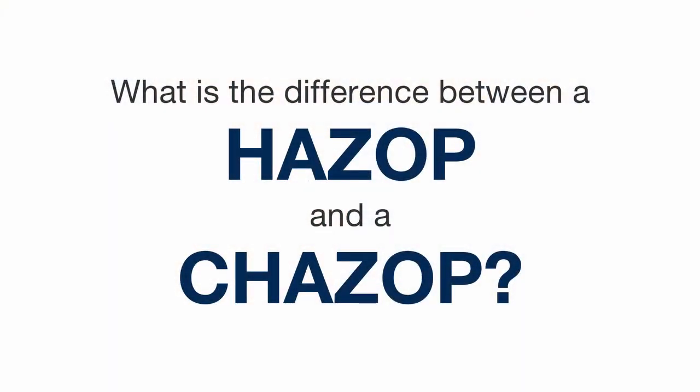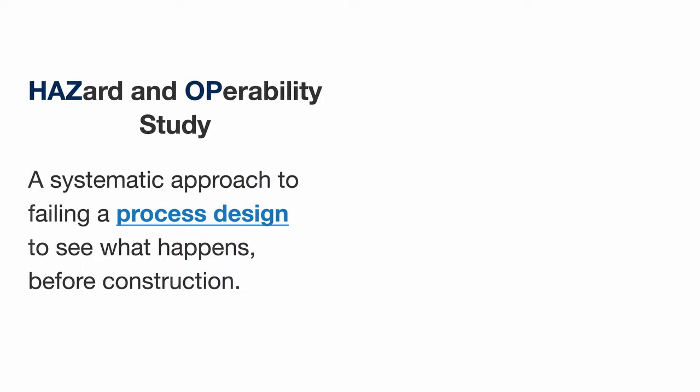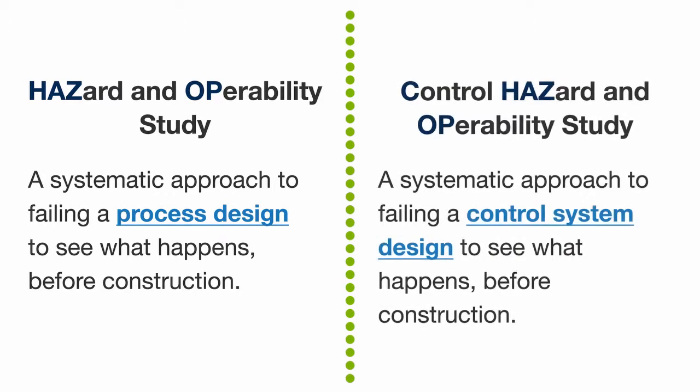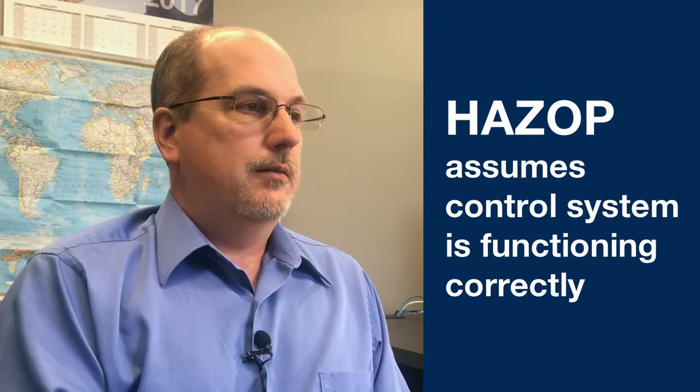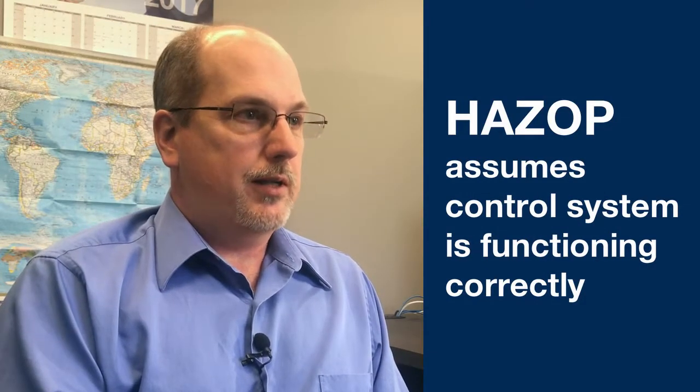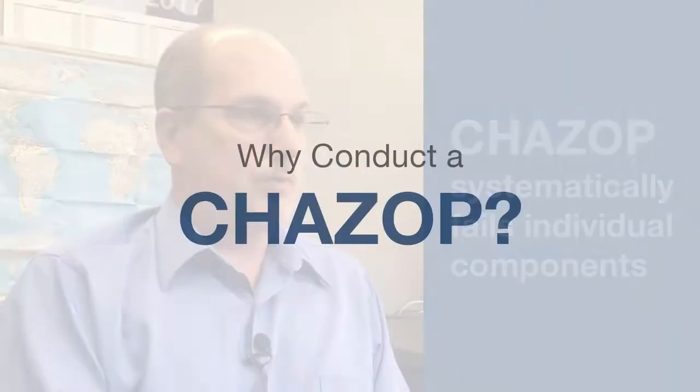The difference between a HAZOP and a CHAZOP really is the focus. A HAZOP looks at the entire facility — the mechanical equipment and the process — where a CHAZOP looks at the control system itself. A HAZOP typically assumes that the control system is operating correctly, whereas a CHAZOP goes into the control system and fails individual components.